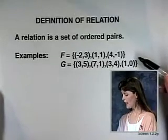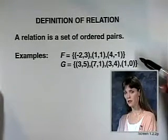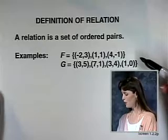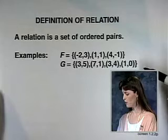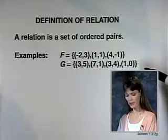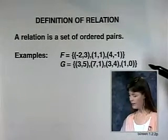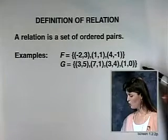Here we have the set F, which includes the ordered pairs (-2, 3), (1, 1), (4, -1), and the set G, which includes the ordered pairs (3, 5), (7, 1), and (3, 4), (1, 0).